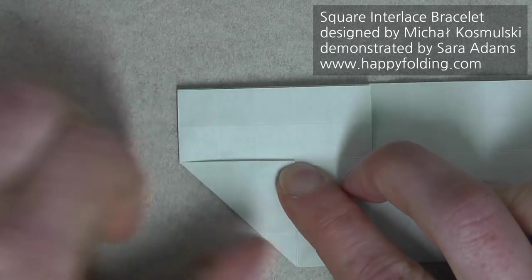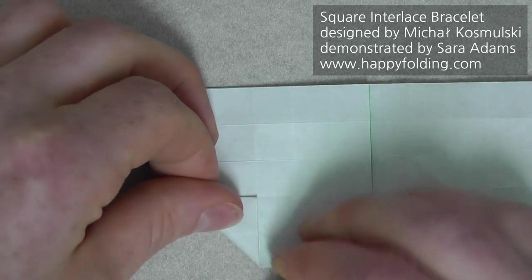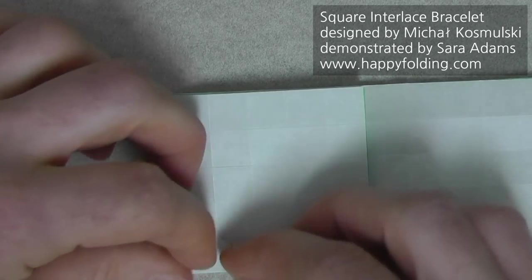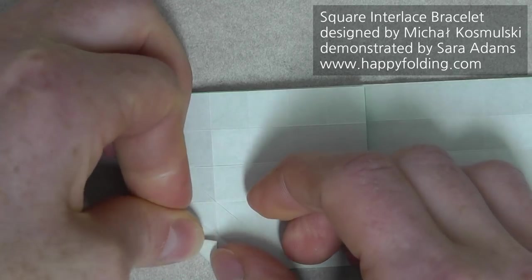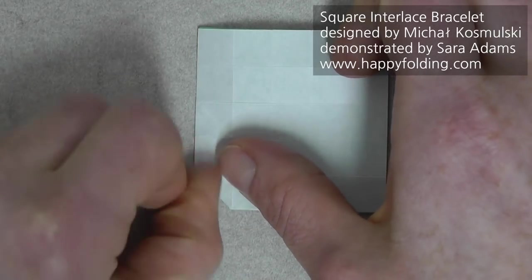Make a strong crease through all the layers. Then, also fold the diagonal of the square with two grid squares side length, and then the diagonal of just that small one. Again, making a strong crease.